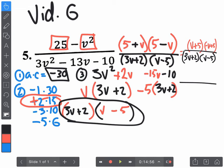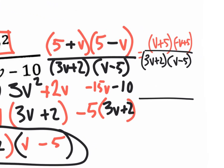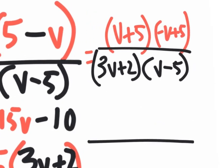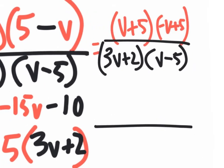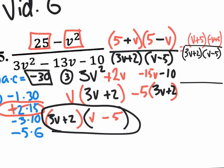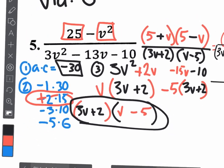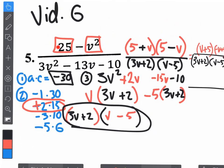Okay guys, so I ran out of time on the last one, I apologize. Just to refresh your memory, we did the square root and we ended up factoring that way. We did the long method of factoring with this quadratic trinomial. You could have guessed and checked. I did the long method and I got this.